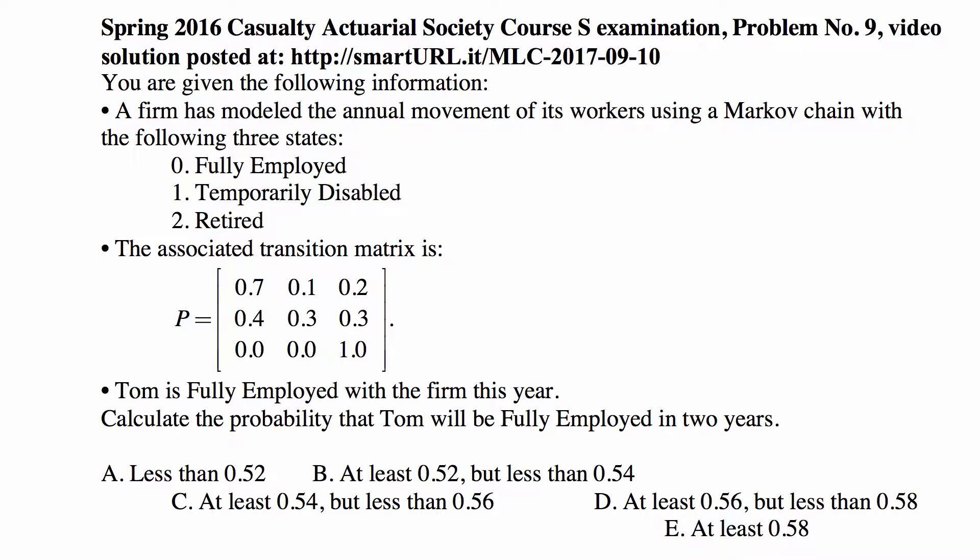Similarly, 0.4 is the probability of transition from state 1 to state 0, 0.3 is the probability of transition from state 1 to state 1, and 0.3 is the probability of transition from state 1 to state 2. You can see that a person who becomes retired doesn't leave that state anymore, so that state is absorbing. The probability of transition from retired to fully employed is 0, and from retired to temporarily disabled is also 0. The probability of remaining retired when the person is retired is 1.